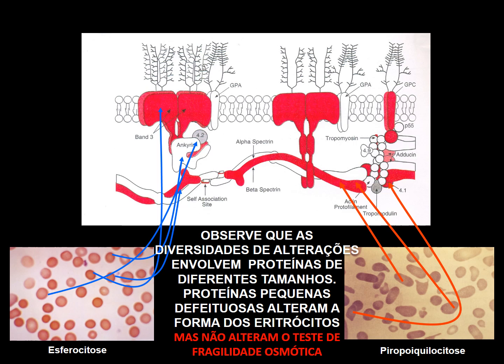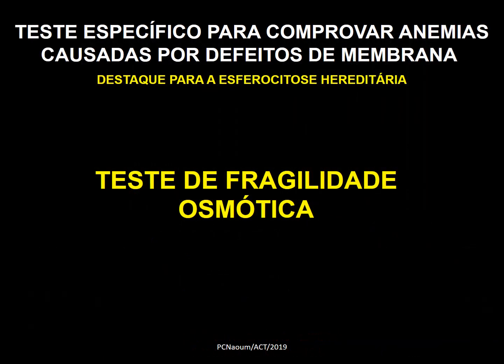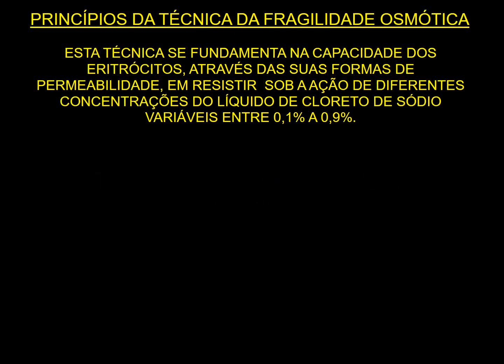A seguir, veremos como se faz o teste de fragilidade osmótica. Ele é um teste específico para comprovar anemias causadas por defeito de membrana, com destaque para esferocitose hereditária. O princípio técnico se fundamenta na capacidade dos eritrócitos de resistir, através de sua permeabilidade de membrana, sob a ação de diferentes concentrações de cloreto de sódio, variáveis entre 0,1% e 0,9%. O NaCl 0,8 e 0,9 são soluções isotônicas.